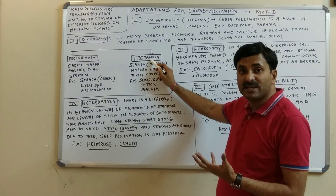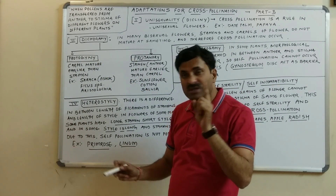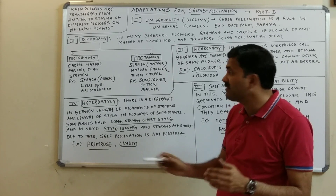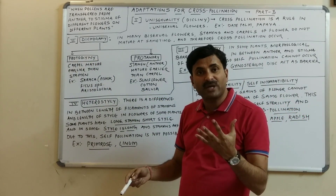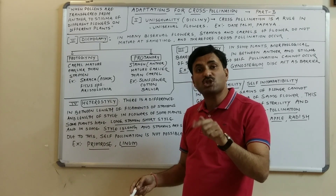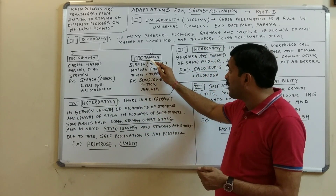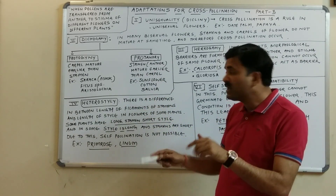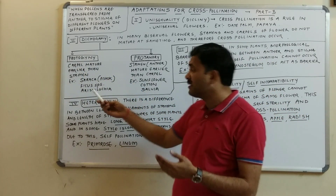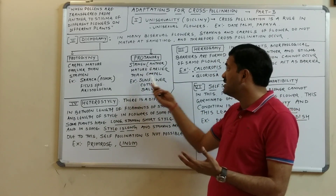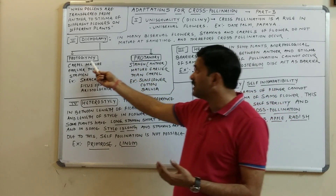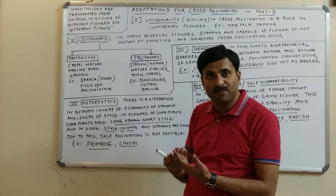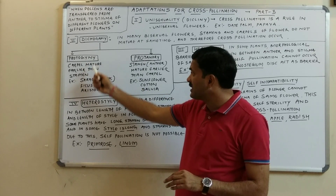Dicogamy is of two types: protogyny and protandry. In protogyny, the female reproductive organ matures before the male reproductive organ — the carpel matures earlier than the stamens. In protandry, the male reproductive organ matures first, then the female — the stamens or anthers mature earlier than the carpel. In both cases, cross-pollination is favored even though the flower is bisexual.